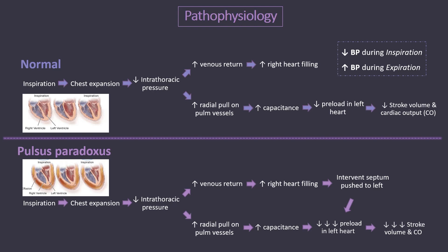Because the drop in blood pressure is secondary to a drop in left ventricular stroke volume, the change in pressure noted during pulsus paradoxus will primarily reflect a decrease in both systolic and pulse pressure. Diastolic pressure is usually minimally affected.